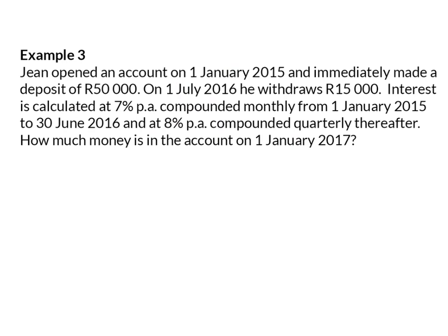Example 3. In this example, we now have different amounts as well as a change in interest rate. Jean opened an account on 1 January 2015 and immediately made a deposit of 50,000 rand. On 1 July 2016, he withdraws 15,000 rand. The interest is calculated at 7% compounded monthly from 1 January 2015 to 30 June 2016, and at 8% per annum compounded quarterly thereafter. How much money is in the account on 1 January 2017?